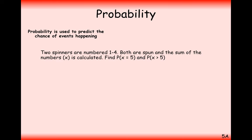So here let's go through a little question. Two spinners numbered 1 to 5 are spun and the sum of the numbers is calculated. Find the probability where x equals 5 and the probability where x is greater than 5. So the sum of the numbers is what we're going to use as the letter x, so it's when x is equal to 5 or when x is bigger than 5.